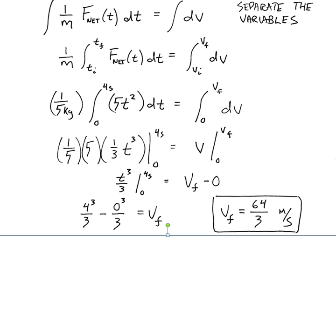And this brings us to 4 cubed over 3, minus 0 cubed over 3, is equal to V final. And, of course, that reduces to 64 thirds meters per second.